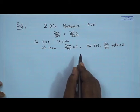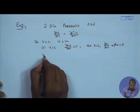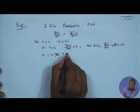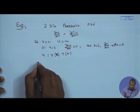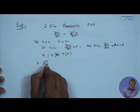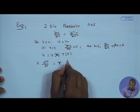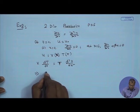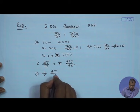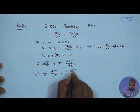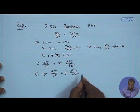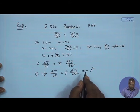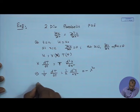Let us look into the solution of this problem. We apply separation of variables: u = X(x) · T(t). Substituting and dividing by X·T, we get (1/T) dT/dt = (1/X) d²X/dx², and each side equals a separation constant.